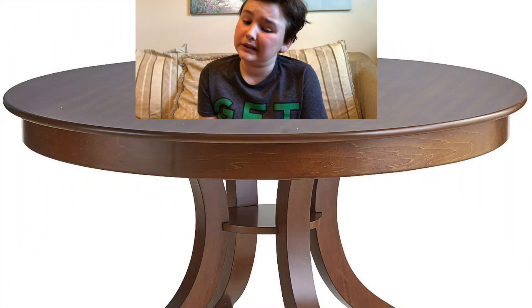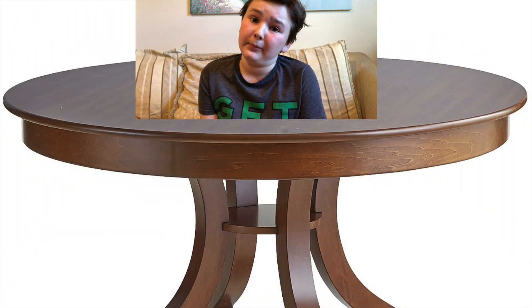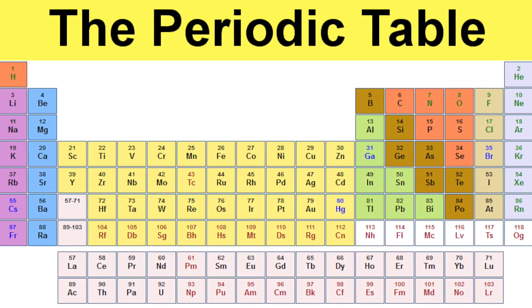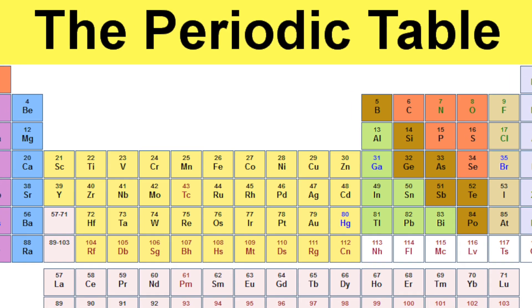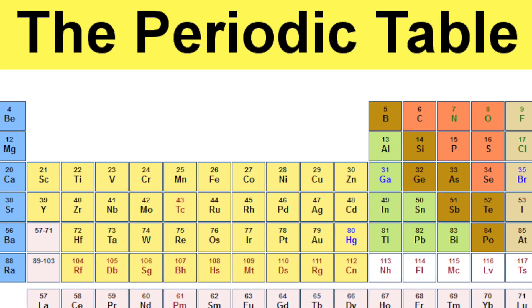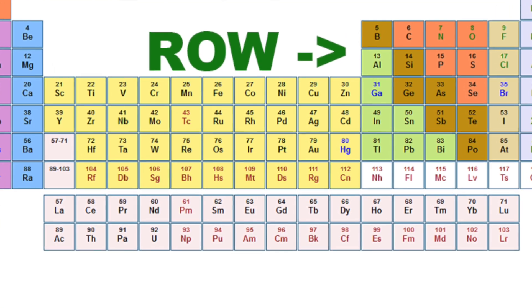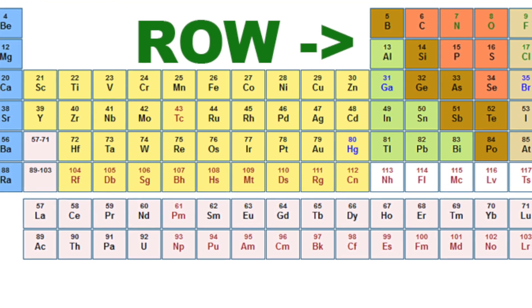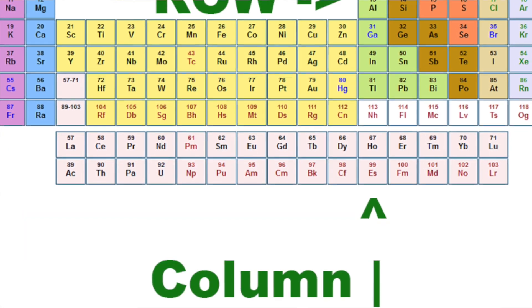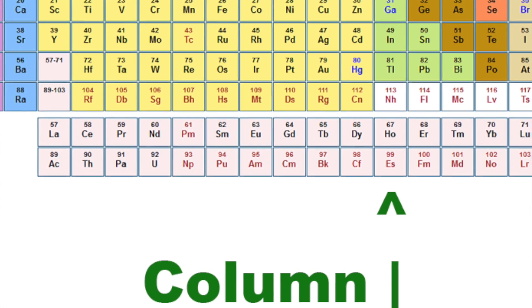Now, the table we were talking about in the beginning is not an actual table table. The Periodic Table is a chart that charts every single element that we know of. Each element is classified into a row and column and is in a specific spot. The Periodic Table is one of the most sophisticated charts.